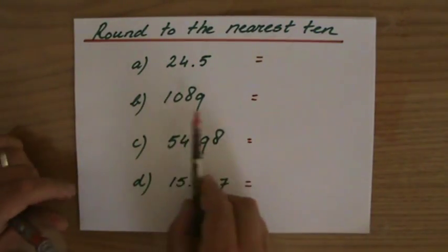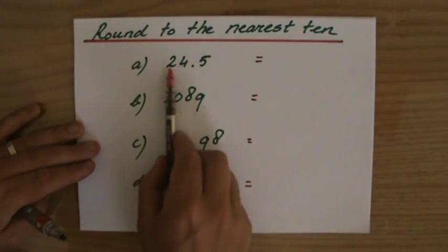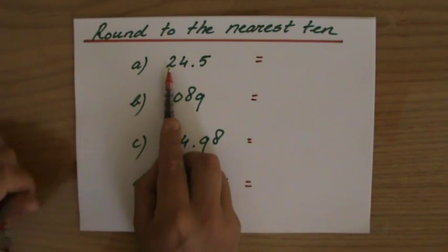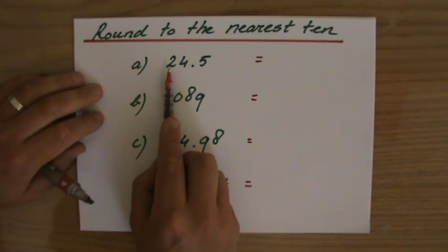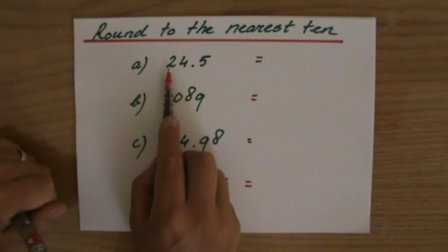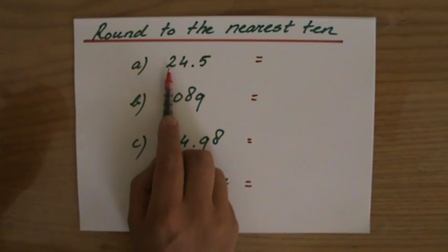Well I gotta find out the place value, where are my tens? Well the first one 24.5, the 2, that's my ten. Alright, and that 2 either stays a 2 so it turns into 20, or it goes up to a 3 so then it would be 30.